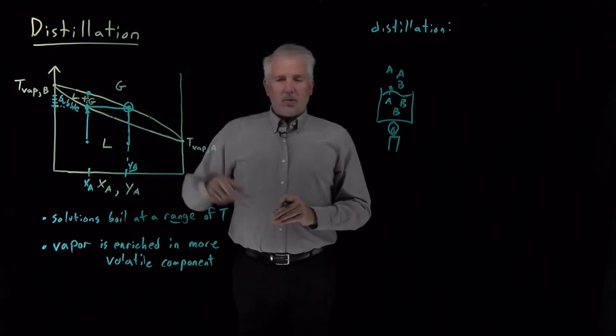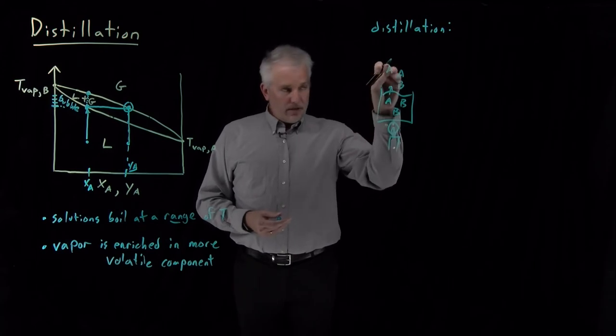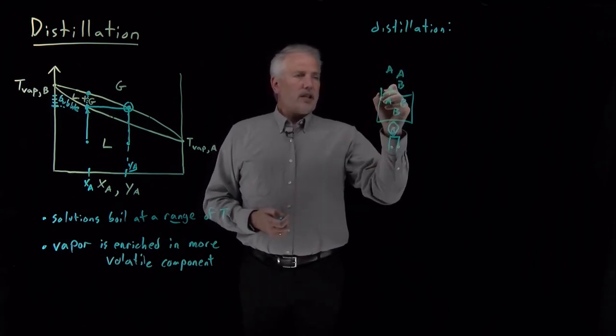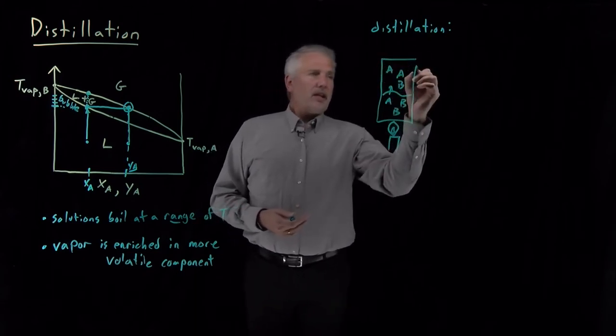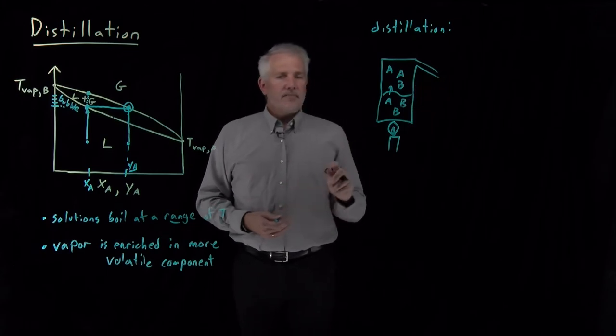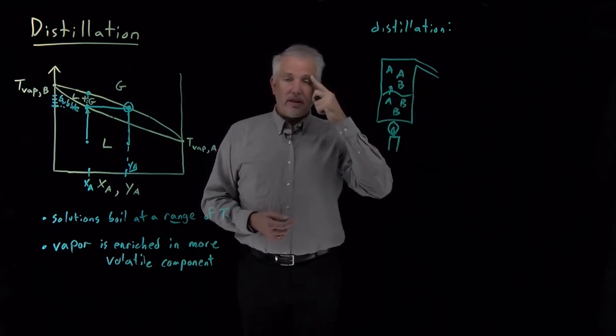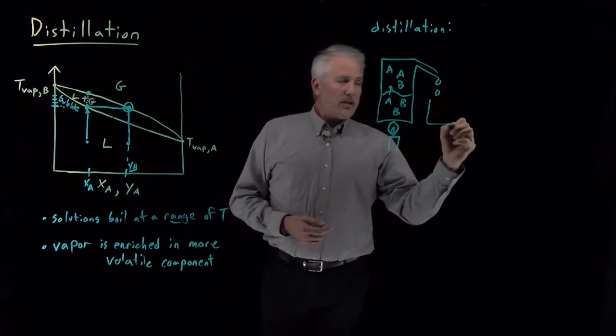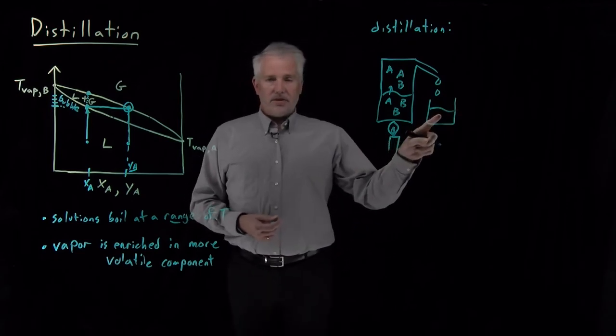I boil that solution and then into the vapor phase goes some A molecules and some B molecules, but the vapor is enriched in the more volatile component A. So I've got more A molecules in the vapor than I used to have in the liquid. Now let's say I put a lid on that container and I let the vapor molecules get far away from the heat source so they condense back down into the liquid phase. So I can get droplets of liquid condensing